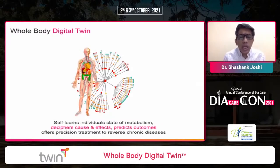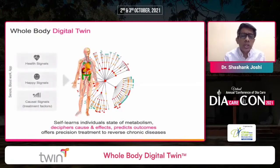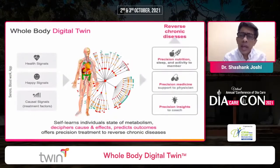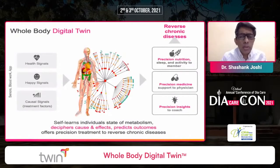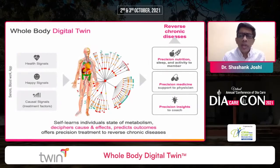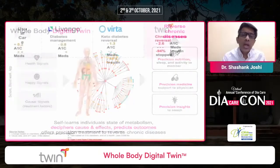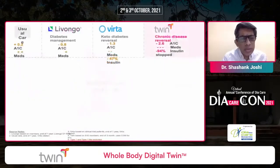The system deciphers cause and effects, predicts outcomes, and offers precision treatment to reverse chronic disease. It picks up health signals and medication signals, then enables precision nutrition, sleep, and activity recommendations for each member. This is not just an app — there is a human coach and a doctor. Under a doctor's supervision it gives insights on which medicines to reduce, and under a coach's supervision it guides nutrition and lifestyle.